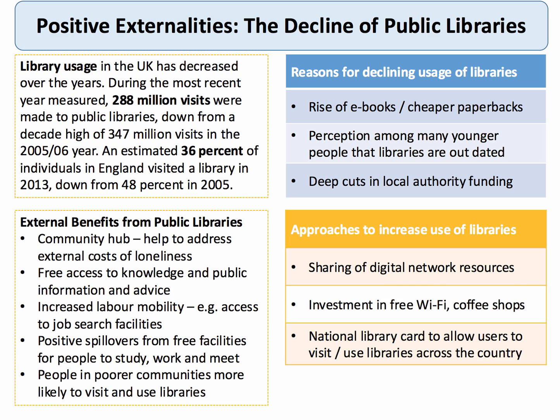A good example of positive externalities is library provision. There's a huge debate at the moment about local authorities, facing budget cuts, deciding to close their public libraries. Library usage in the UK has fallen quite sharply — in 2013, only about one third of people in England visited a library, down from a half in 2005. Although more than five million visits a week are still made to public libraries, that's well down on seven million visits a week just ten years ago.